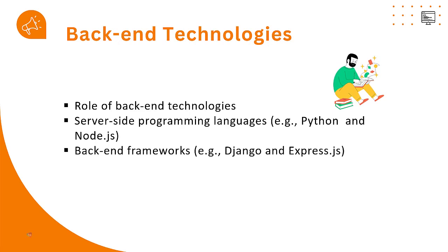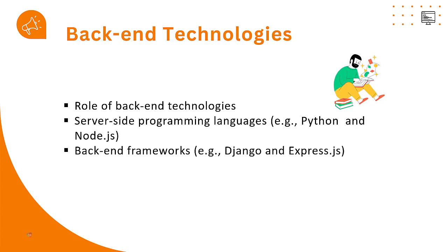Back-end technologies: as a coder you need to learn any one server-side programming language — Python, Node.js, C#, or Java. Server-side means the programming language is compiled at the server side; based on the user request, a response is given to the end user. The logic implemented is not displayed after compilation — it becomes byte code transmitted to the client, which is an important advantage of server-side programming.